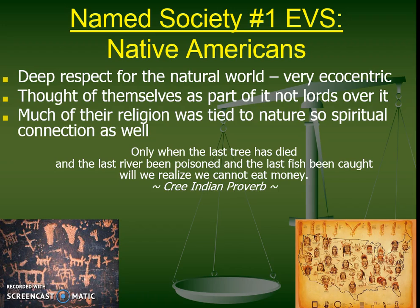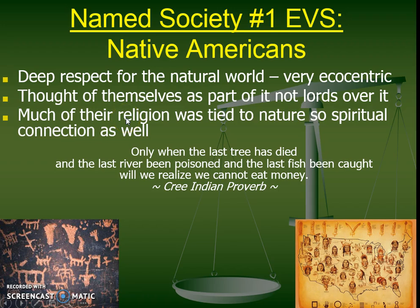We need to be able to compare two different societies and their environmental value systems as case studies, and name them specifically on a test, quiz, or IB exam. For example, Native Americans have a very ecocentric environmental value system — they are probably deep ecologists — because they have a deep respect for the natural world. We can look at a quote to make sense of that. Specifically, their religion is very tied to nature and is very spiritual, and they use that to make decisions in how they treat the world around them and protect the environment.